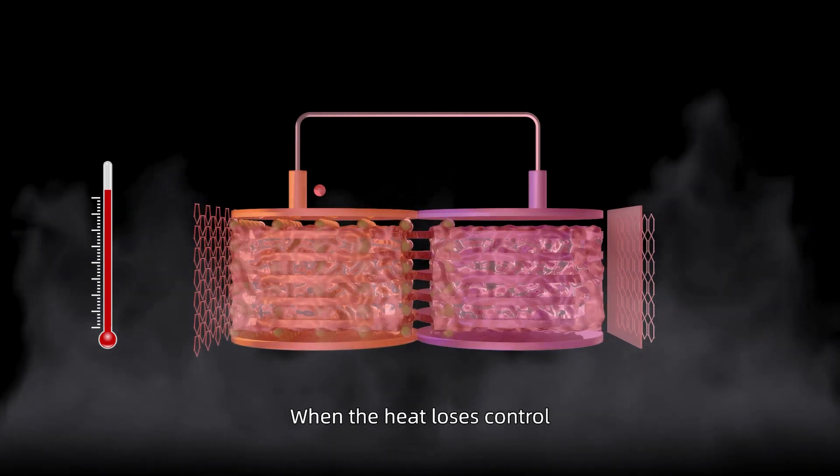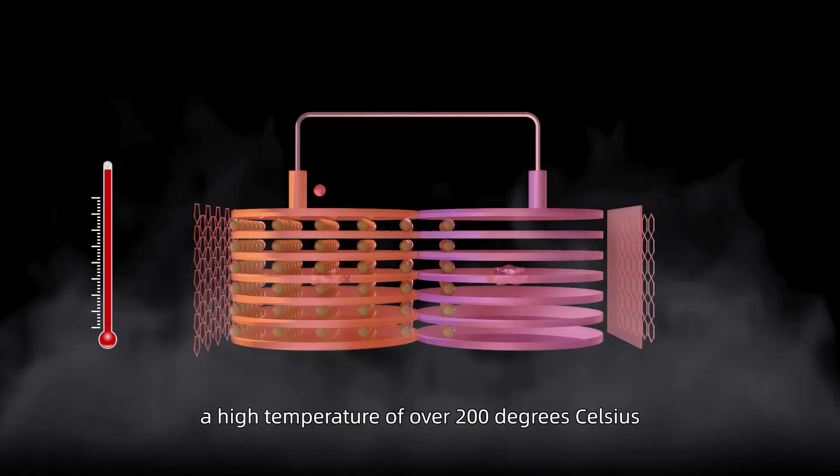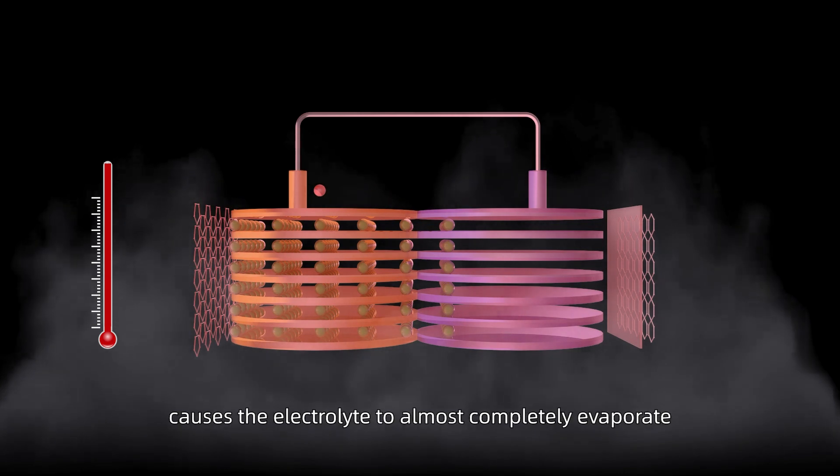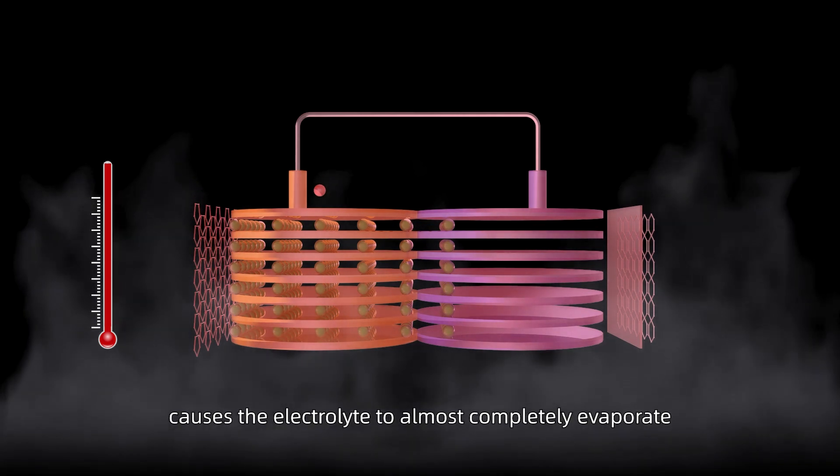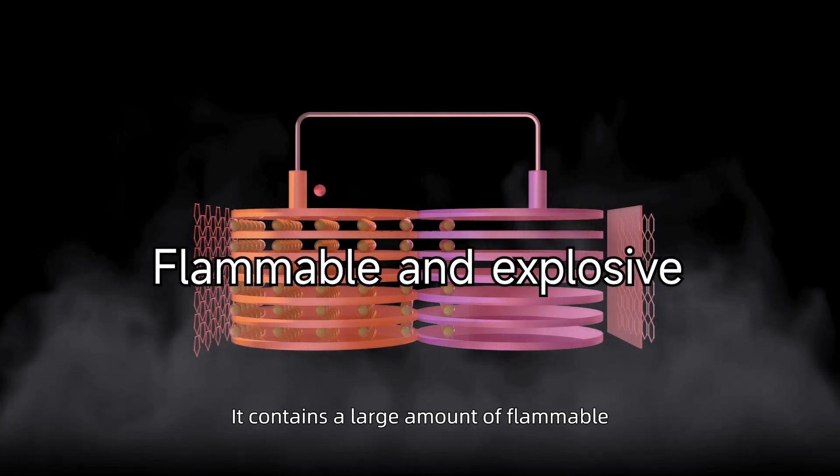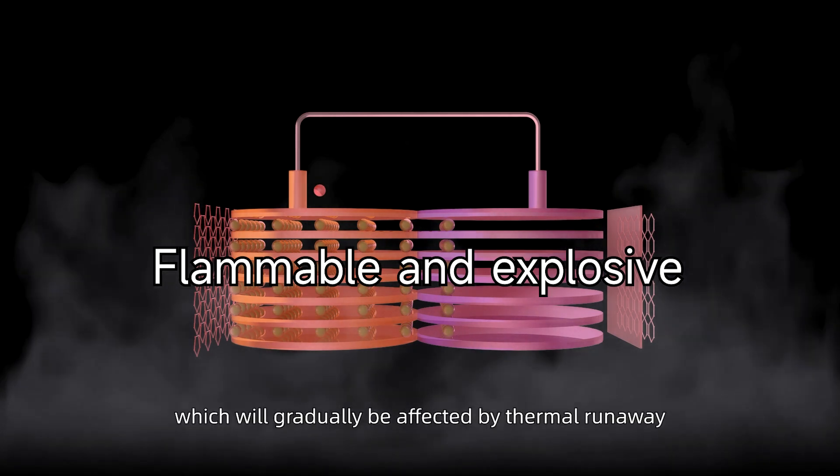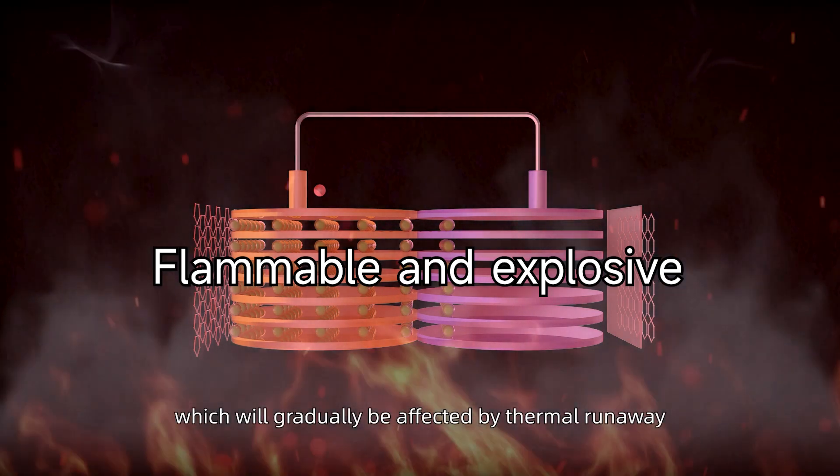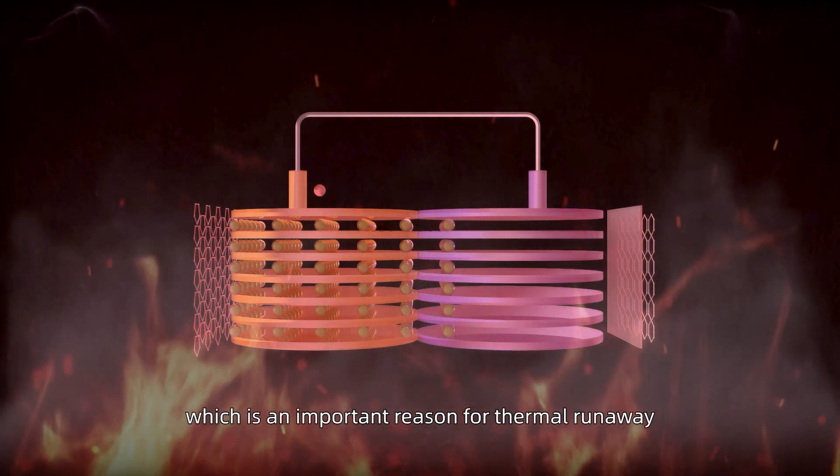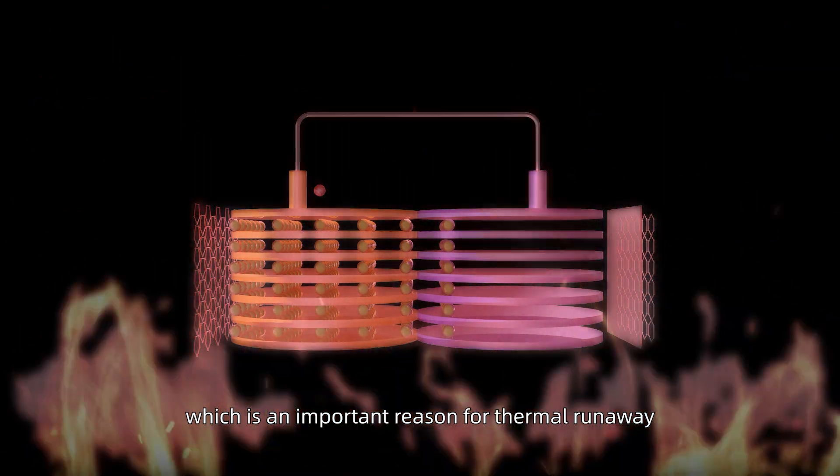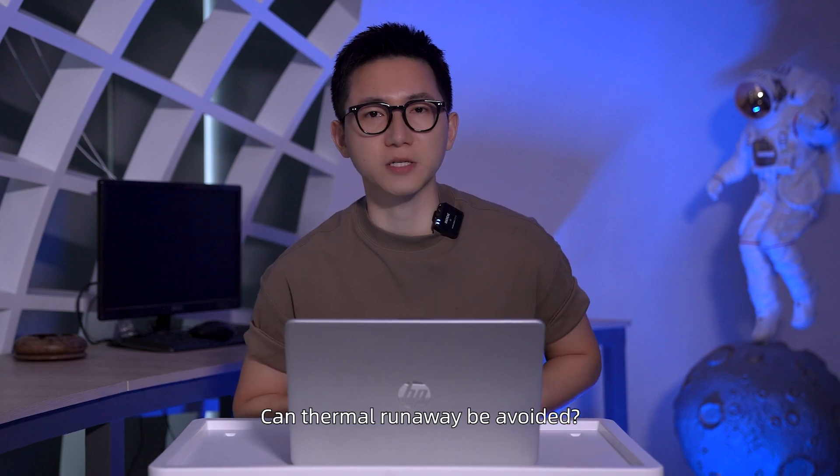When the heat loses control, a high temperature of over 200 degrees Celsius causes electrolyte to mostly completely evaporate and decompose. It contains a large amount of flammable and explosive organic solvents which will gradually be affected by thermal runaway and eventually decompose into combustion, which is an important reason for thermal runaway.